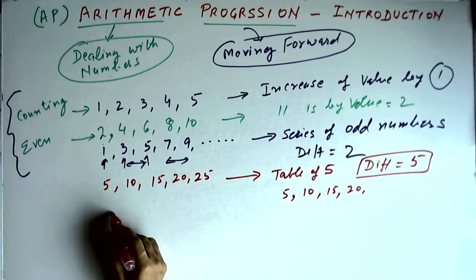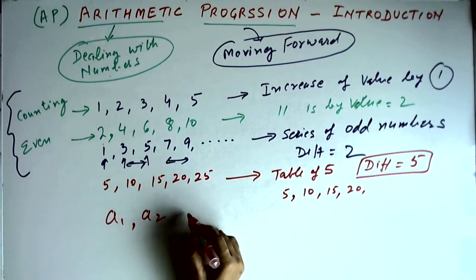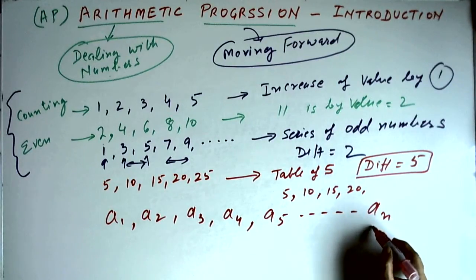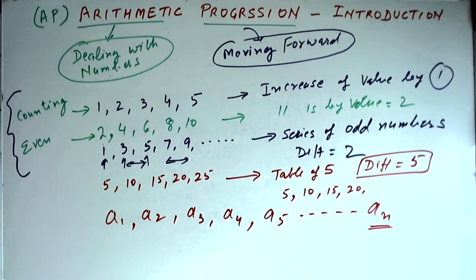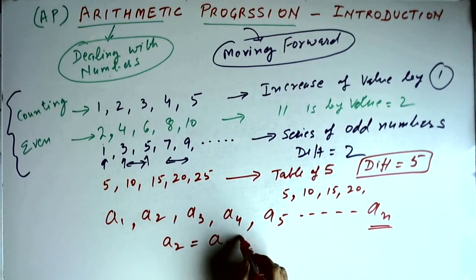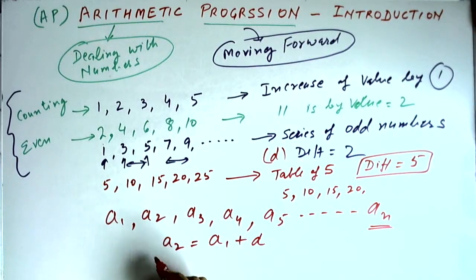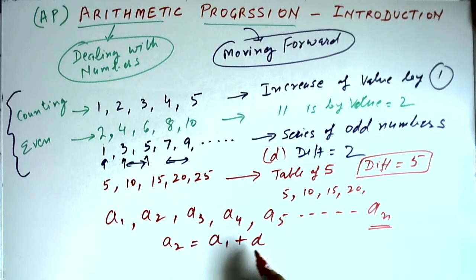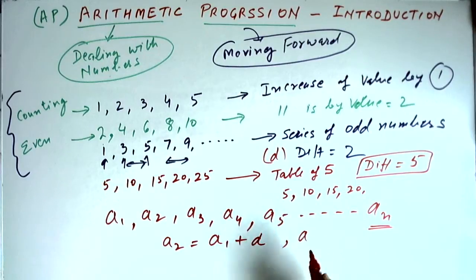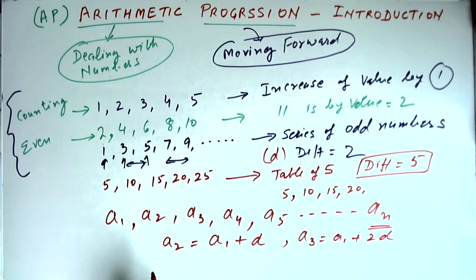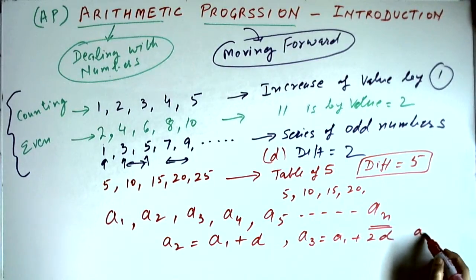In arithmetic progression, we write the terms as a1, a2, a3, a4, a5, and so on, up to an — the nth term. By convention, terms are represented by the lowercase letter a and the common difference as d. So the second term a2 equals a1 plus d, the third term a3 equals a1 plus 2d, and the fourth term equals a1 plus 3d.